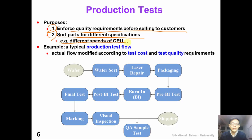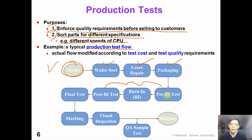For example, we can sort CPUs at different speeds so that we can sell them at different prices. This figure shows a typical production test flow. After the wafer is manufactured, we perform a wafer test or wafer sort. Then we can repair defective memory on the die using laser, and then we package those dies that pass the wafer test. After that, we perform burn-in testing.